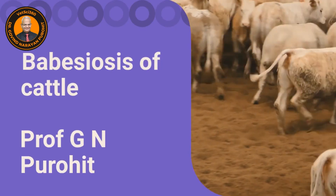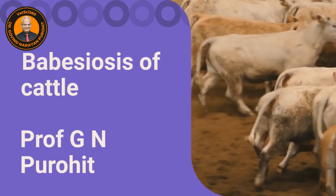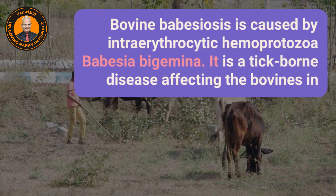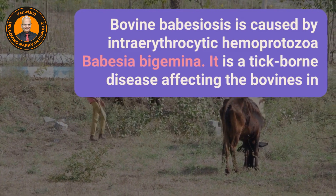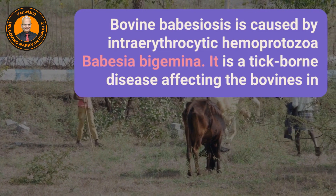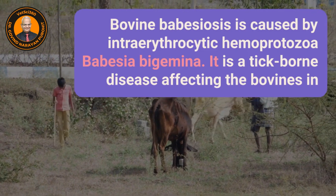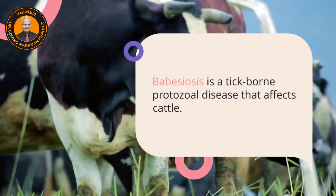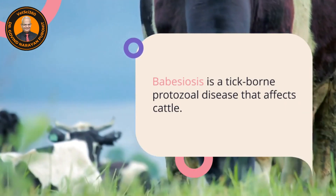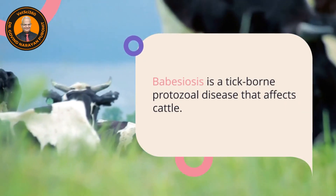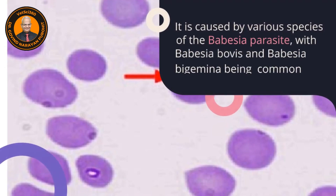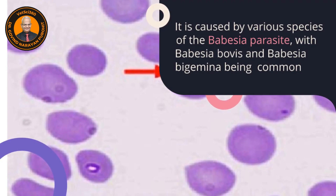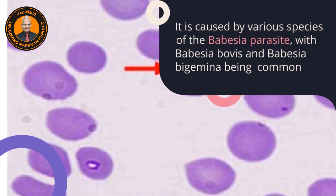Today we discuss babesiosis of cattle, a deadly disease. Bovine babesiosis is caused by an intra-erythrocytic hemoprotozoan, Babesia bigemina. It is a tick-borne disease affecting bovines. Babesiosis is a tick-borne protozoal disease that affects cattle in many countries and is also found in India. It is caused by various species of the Babesia parasite, with Babesia bovis and Babesia bigemina being common in cattle.